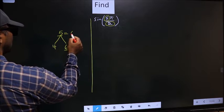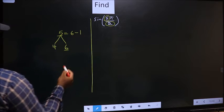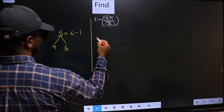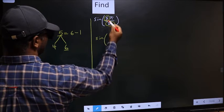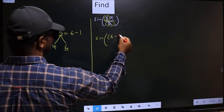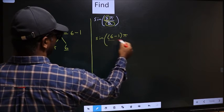So now 5 should be written as 6 minus 1. So this will change to sin. In place of 5, now you write 6 minus 1, π/2.